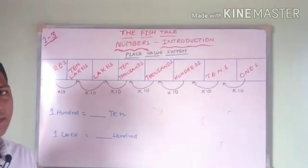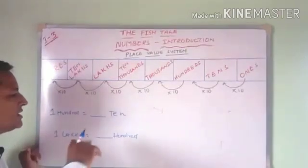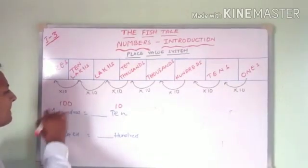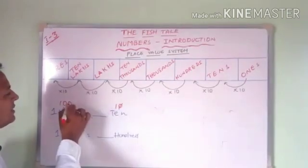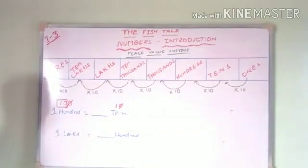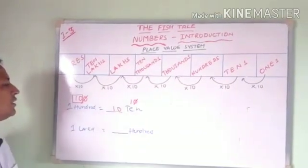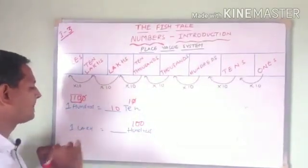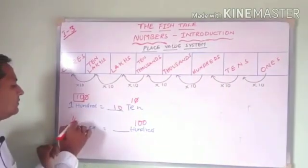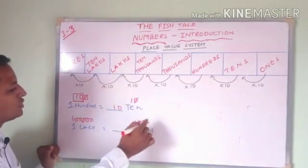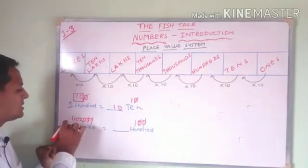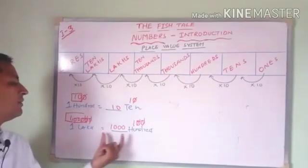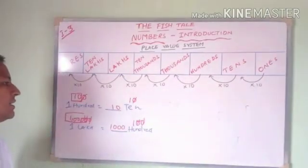There are many methods to solve this, but let's use one method. For 10 rupees to make 100: write 10 and 100, cancel one zero — the number left is 10. So 100 is made up of 10 tens. Similarly, for 100 rupees to make 1 lakh: write 100 and 1,00,000. Cancel the 2 zeros from 100 against 2 zeros of 1 lakh — the number left is 1000. So 1 lakh is made up of 1000 hundreds.